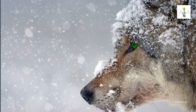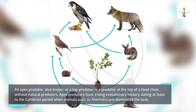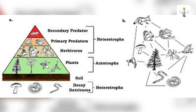Interesting facts about apex predators. An apex predator, also known as a top predator, is a predator at the top of a food chain without natural predators. Apex predators have a long evolutionary history dating at least to the Cambrian period, when animals such as Anomalocaris dominated the seas. Apex predators are usually defined in terms of trophic dynamics.